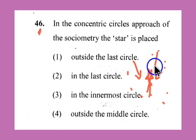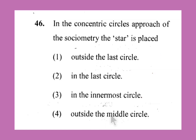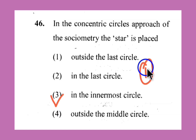Question number 46: Where is the star located — outside the last circle, in the last circle, in the innermost circle, or outside the middle circle? The star is placed inside the innermost circle — that is the right answer.